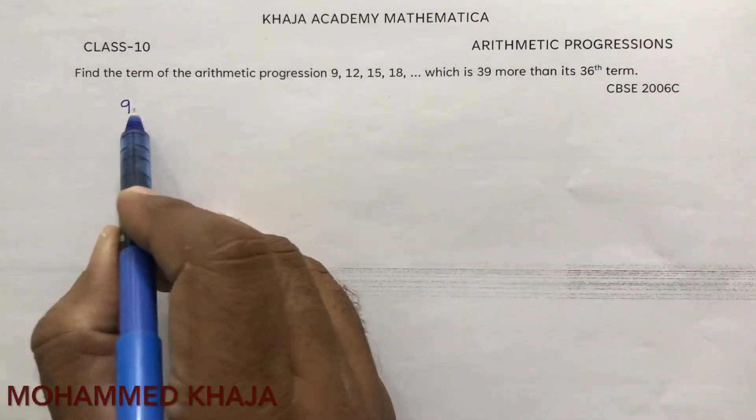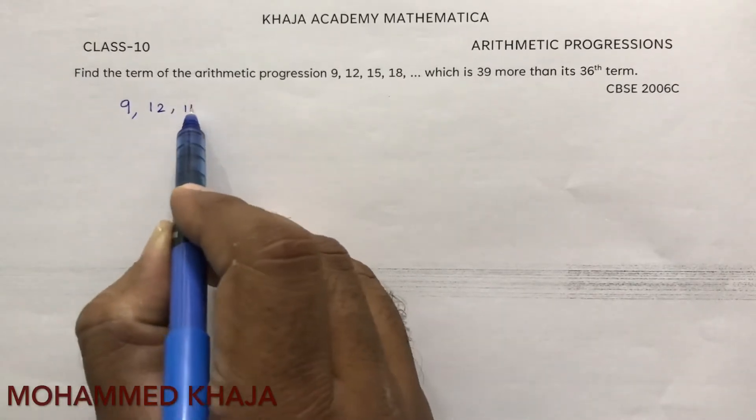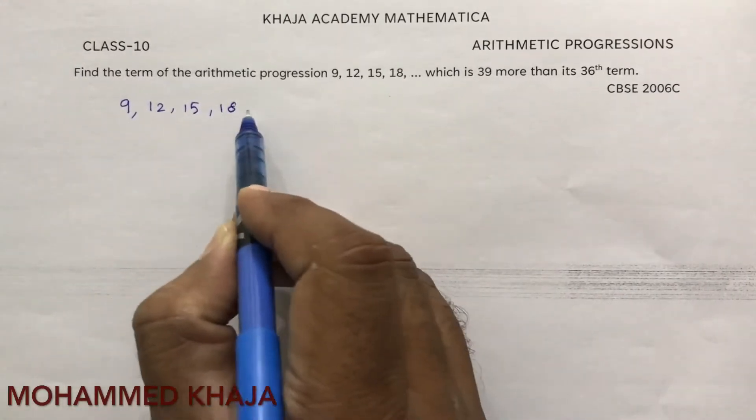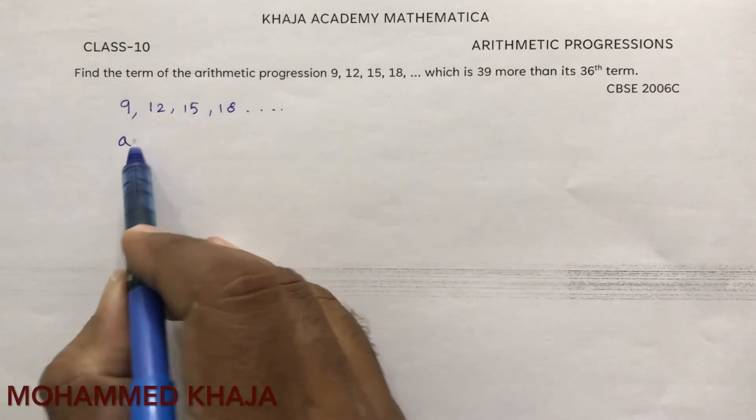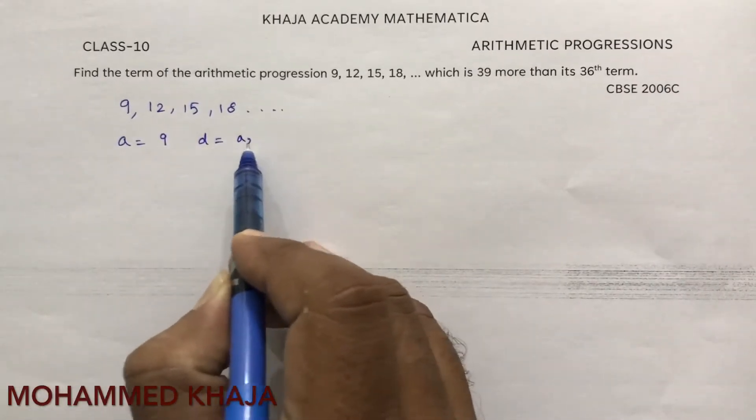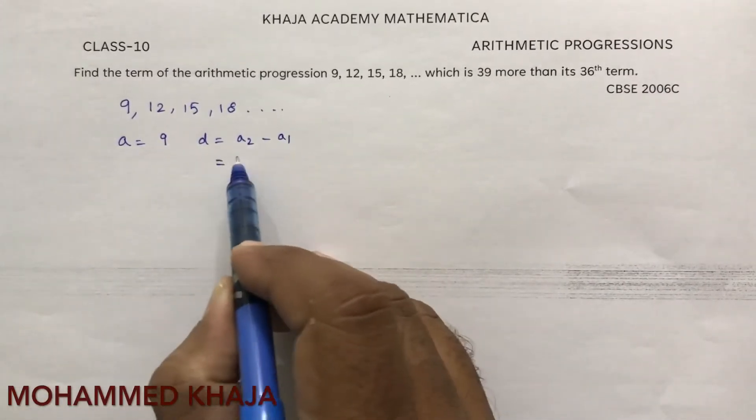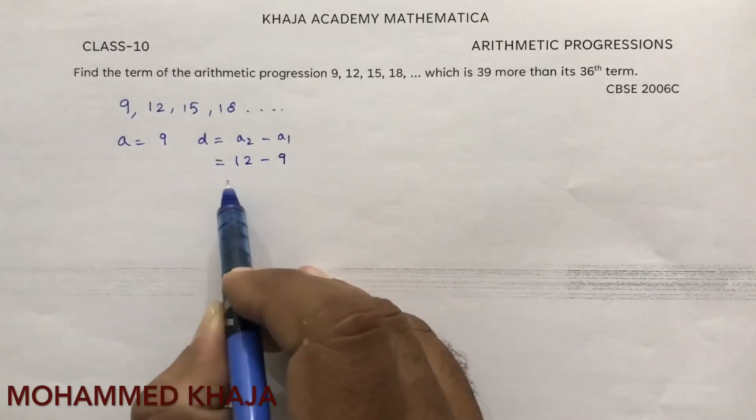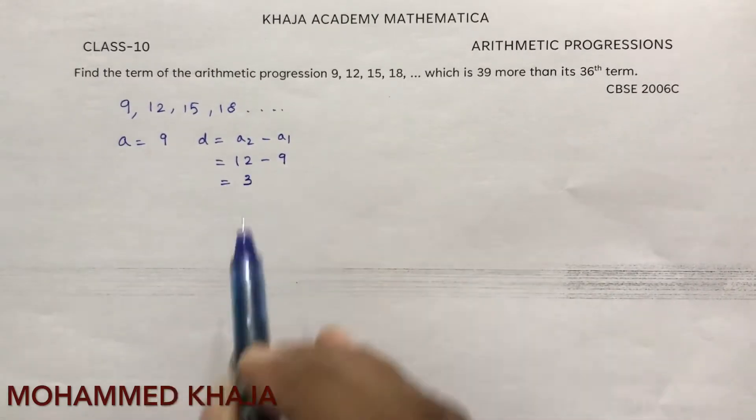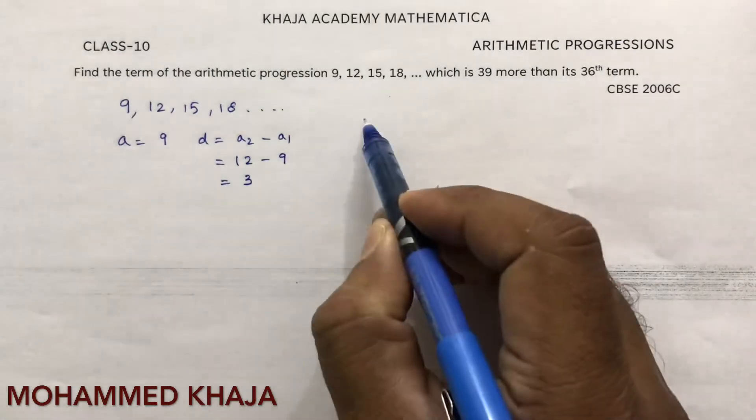Here the series is 9, 12, 15, 18... The first term is 9, and the common difference is a2 minus a1, that is 12 minus 9, which is 3.